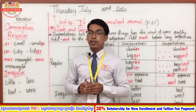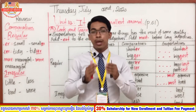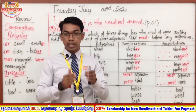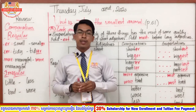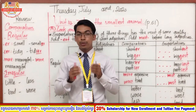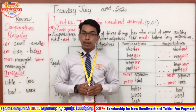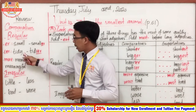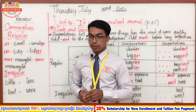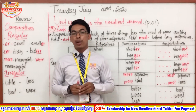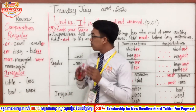The second type is y→i+er. This applies to adjectives that have two syllables and end in the letter Y. We change Y to I and then add -er to make the comparative adjective. For example, the word 'tidy' has two syllables — we change Y to I and add -er. Similarly, the word 'easy' — we change Y to I and add -er, and it becomes 'easier'.